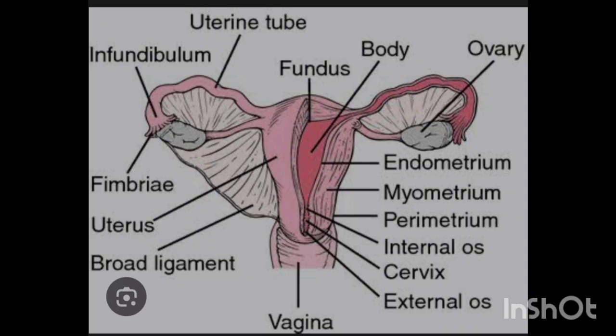The uterus has a pear-shape, just like the gallbladder. It is also called the womb and is the normal place where the embryo is implanted during the gestational period. The uterus is divided into three parts: the uppermost portion is called the fundus, the middle large portion is called the body or corpus, and the lower part is called the cervix, which consists of internal and external os.